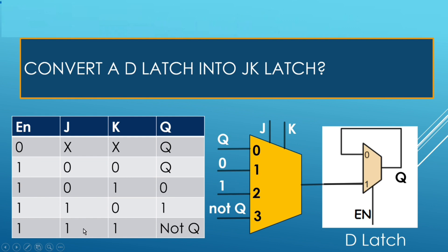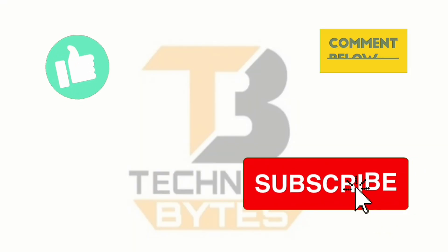When J is 1 and K is 1, output should be inverted of its previous value. When J is 1 and K is 1, this line is going to path to output, and let us make it the inversion of its previous value. This is how we convert a D latch into a JK latch. Thanks for watching.